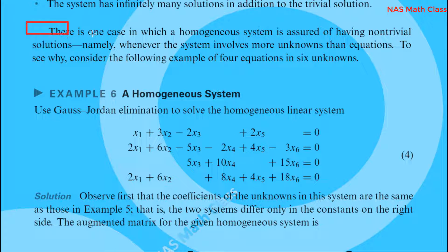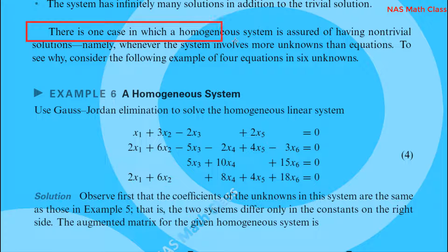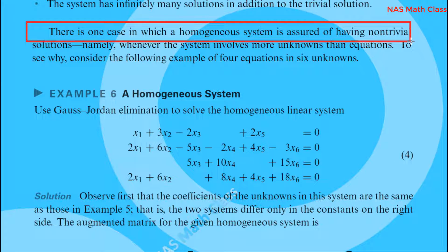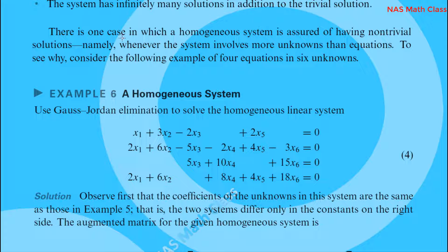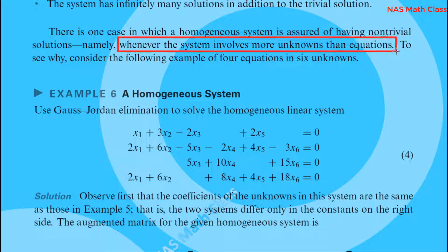There is one case in which a homogeneous system is assured of having non-trivial solutions: namely, whenever the system involves more unknowns than equations.